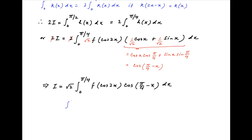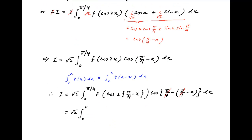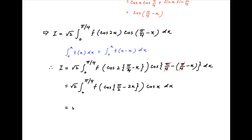Now we again use the property that integral 0 to a of t(x)dx equals integral 0 to a of t(a minus x)dx. Therefore I equals root 2 times integral 0 to pi upon 4, replacing x with (pi upon 4 minus x), giving f of cos of 2 times (pi upon 4 minus x) times cos of (pi upon 4 minus (pi upon 4 minus x)) dx. This simplifies to root 2 times integral 0 to pi upon 4 of f(cos(pi upon 2 minus 2x))·cos(x)dx. Now cos(pi upon 2 minus 2x) equals sin 2x, and therefore I equals root 2 times integral 0 to pi upon 4 of f(sin 2x)·cos(x) dx, which is the required result.